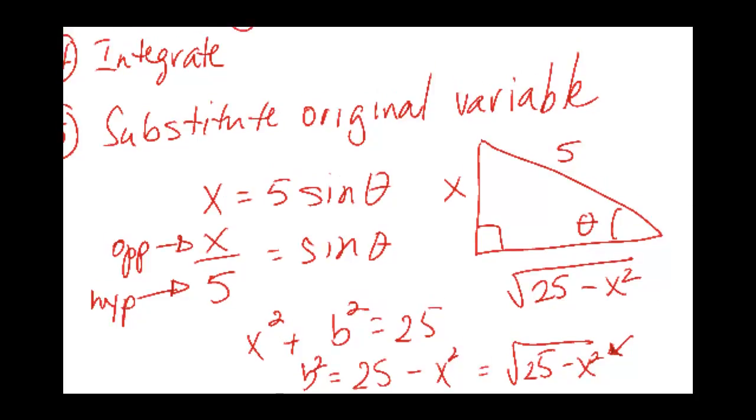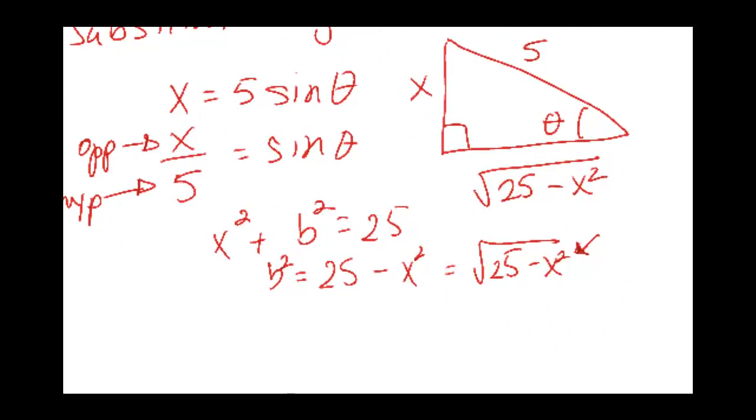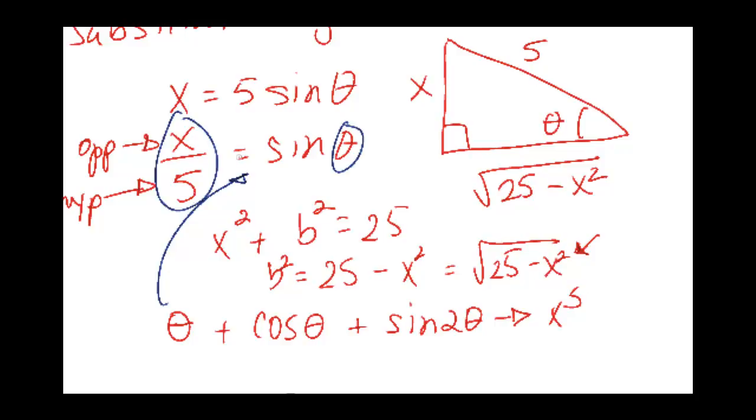And let's say your answer was theta plus cosine theta plus sine 2 theta. How would you convert that back into x's? Well, theta would use this expression here, that's the relationship between theta and x right there. So if you arcsine both sides, you get that theta would be arcsine of x over 5.